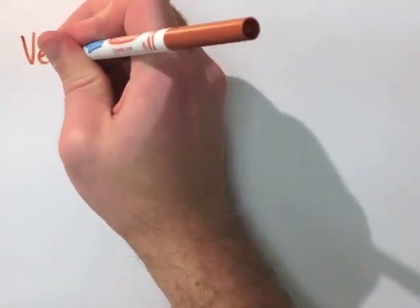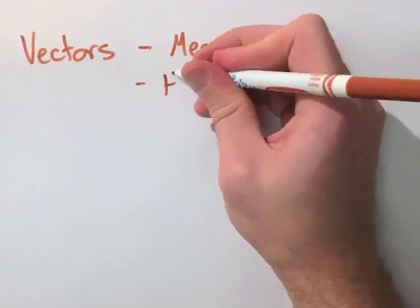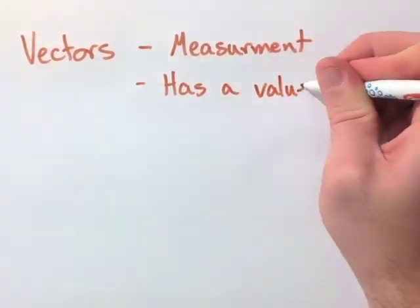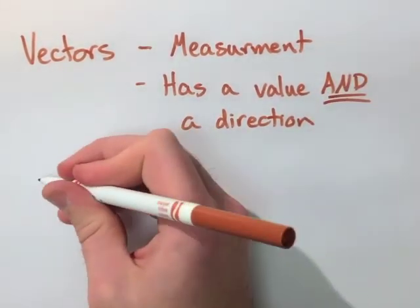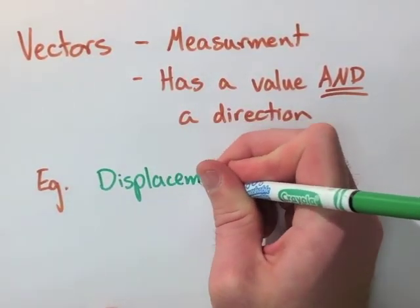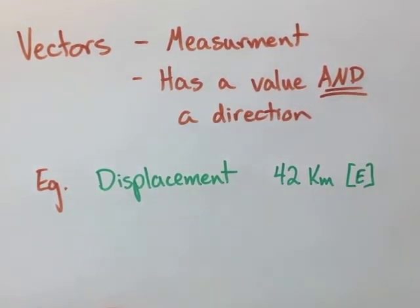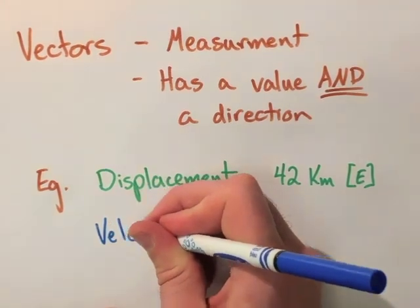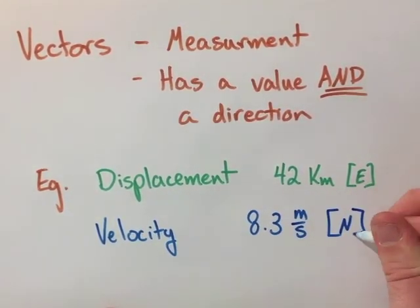Now, looking at vectors, we notice they're very similar but these actually have a measurement and now they have a direction with them. An example of this would be looking at something like displacement. Displacement really is just a distance but now we have some direction that we're looking at, so 42 kilometers east. Or velocity, which is just the same as speed, but we have 8.3 meters per second north.